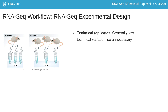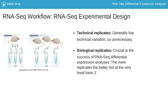For RNA-Seq experiments, there is generally low technical variation, so invest in biological replicates instead. The more biological replicates you have, the better the estimates for mean expression and variation, leading to more robust analyses. Be sure to have at least three.